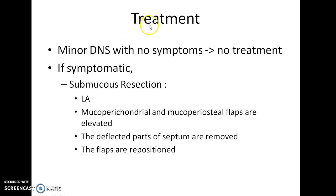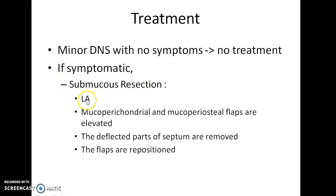Minor deviated nasal septum with no symptoms requires no treatment. If symptomatic, surgery can be done. One option is submucous resection, performed under local anesthesia. The muco-perichondrial and muco-periosteal flaps are elevated, the deviated parts of the septum are removed, and the flaps are repositioned.